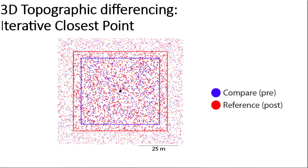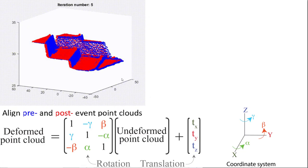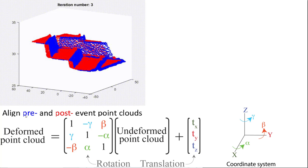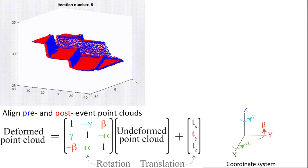The reference dataset typically has a buffer relative to the compare dataset. That's because when doing the 3D differencing, we iteratively shift the compare dataset until it aligns with the reference dataset, so the shifted compare must align with the reference — hence we need this extra buffer. After the windowing, the differencing is done using the iterative closest point algorithm, illustrated here for a set of benched topography. The blue compare data is iteratively moved and shifted until it aligns with the red post-event data.